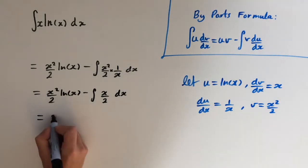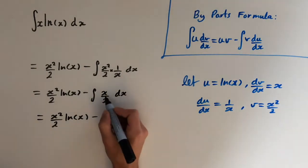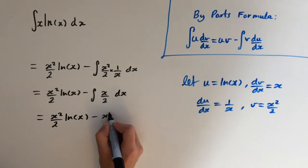So this equals x squared over 2 ln of x, and the integral of x over 2 is x squared over 4. So this is minus x squared over 4 plus c.